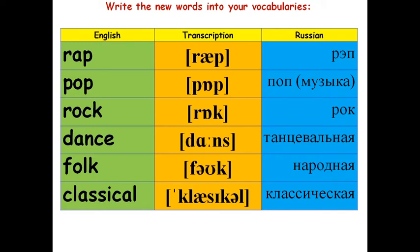Okay, now write down the new words into your vocabularies, please. Запишите названия видов музыки к себе в словарик. Rap – это рэп. Pop – поп-музыка. Rock. Dance – танцевальная музыка. Folk – народная. Обратите внимание, в слове folk не читается буква L. Classical – классическая музыка.